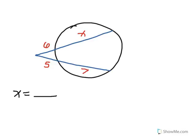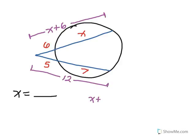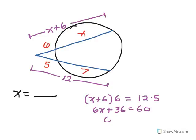In this next example, we again have two secant segments drawn through a circle from an external point. The external piece times the whole equals the external piece times the whole. The whole top secant is X plus 6, and the whole bottom secant is 12. So (X plus 6) times 6 equals 12 times 5. That gives 6X plus 36 equals 60, so 6X equals 24, meaning X equals 4.